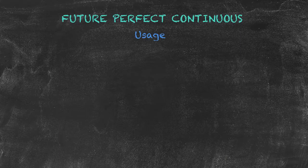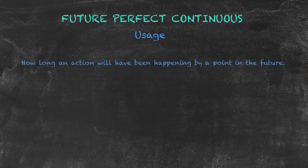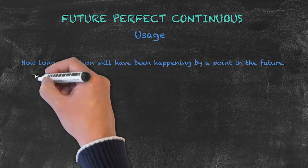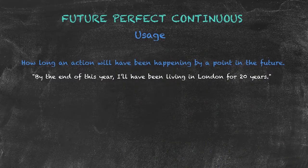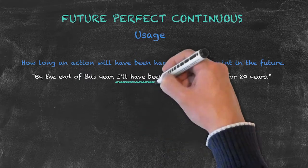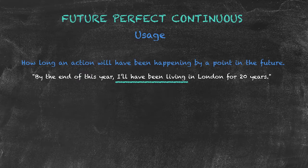As mentioned earlier, the usage for the future perfect continuous tense is to show how long an action will have been happening by a future time. Our example sentence reads: 'By the end of this year, I'll have been living in London for 20 years.' So I'm talking about a point in the future - by the end of this year - and how long the action will have been happening by that time.